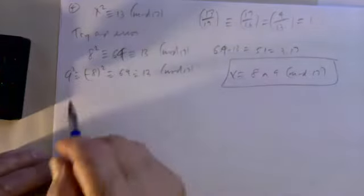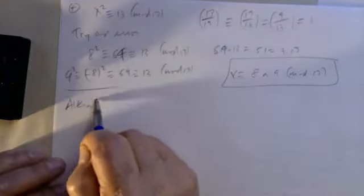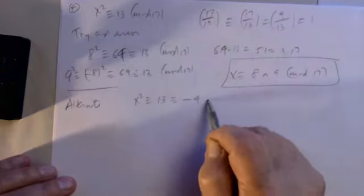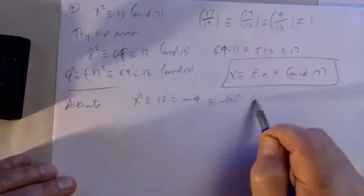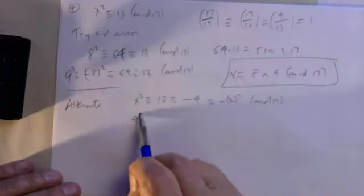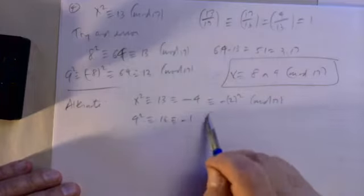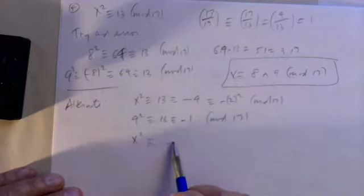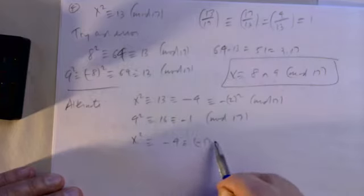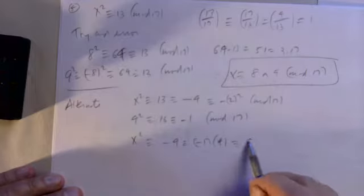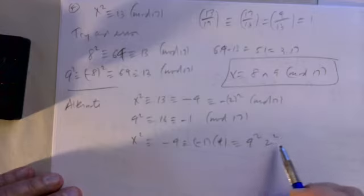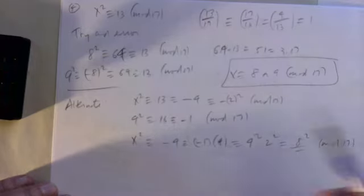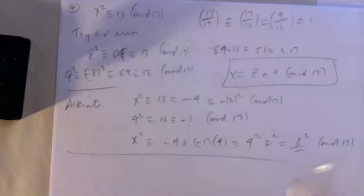There's another approach: note that 13≡−4≡−(2²) mod 17. Also, 4²=16≡−1 mod 17. So x²≡−4=(−1)·4=(4²)·(2²)=8² mod 17. This gives x=8 directly as a solution, and then −8≡9 gives the other. Either method works fine.